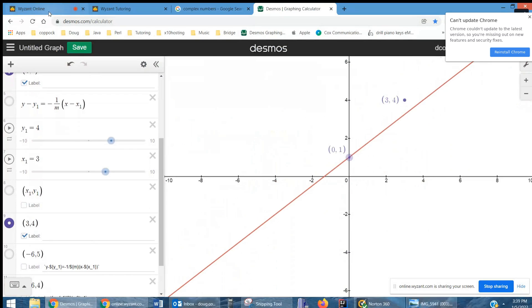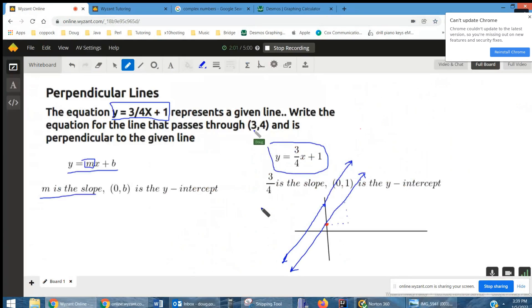Now here's what you need to know. Perpendicular lines have slopes that are negative reciprocals. So for a line that's perpendicular to a line with the slope of three-fourths,